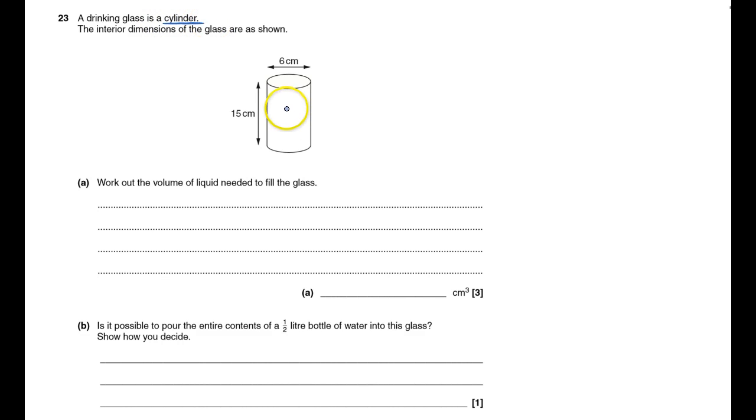A drinking glass is a cylinder. These are dimensions, the interior, because that's where the water or where a drink fits in.